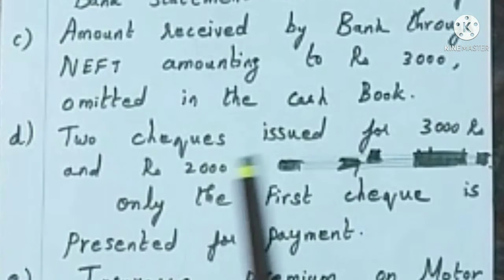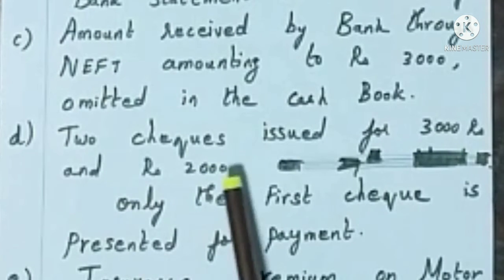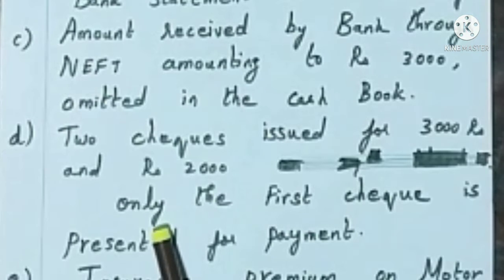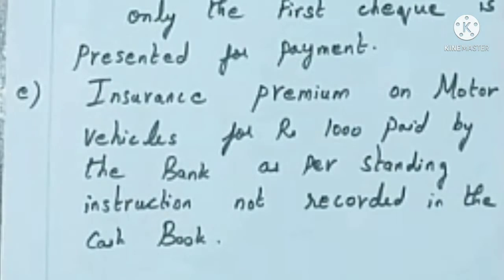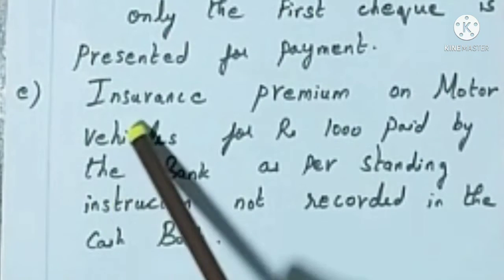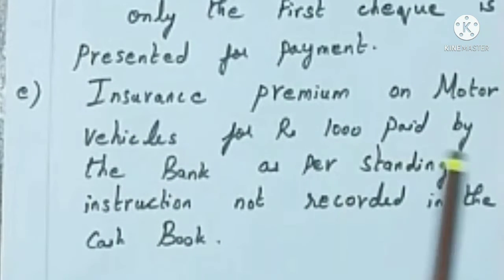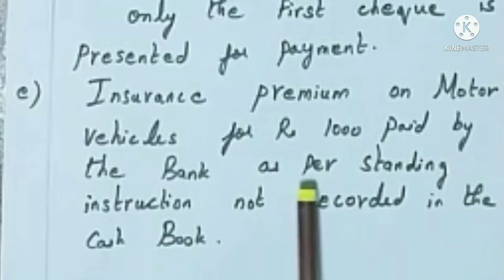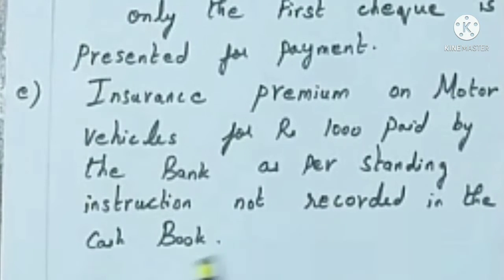Two checks issued for Rs. 3000 and Rs. 2000, but only the first cheque is presented for payment. Insurance premium on motor vehicles for Rs. 1000 paid by the bank as per standing instruction, not recorded in the cashbook.